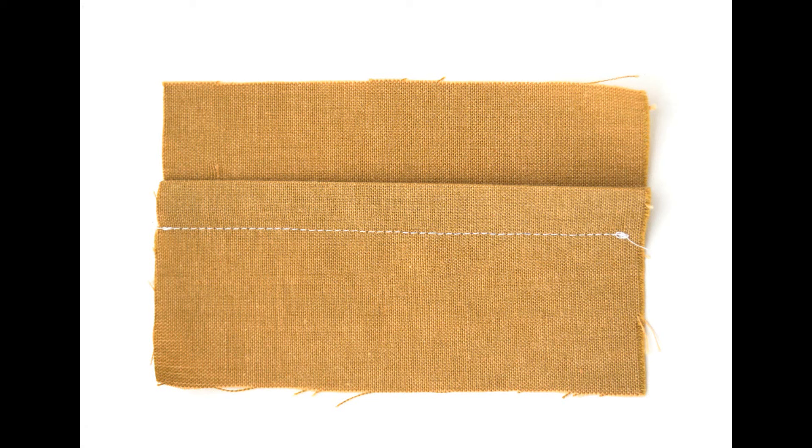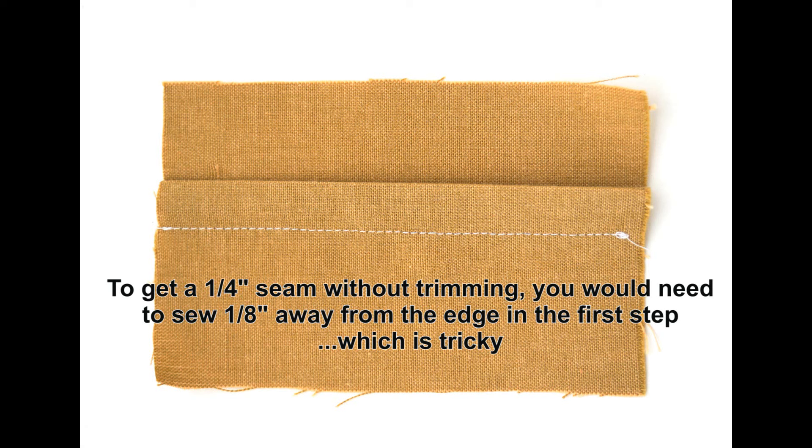In that case I would need to sew an eighth of an inch away from the edge in the first step. And this might not be very easy depending on the fabric and how confident you are at sewing. So I would personally include the trimming step if I was making a quarter of an inch seam allowance, but if I was making a half inch seam allowance like the examples I used today, then I would miss out the trimming stage.